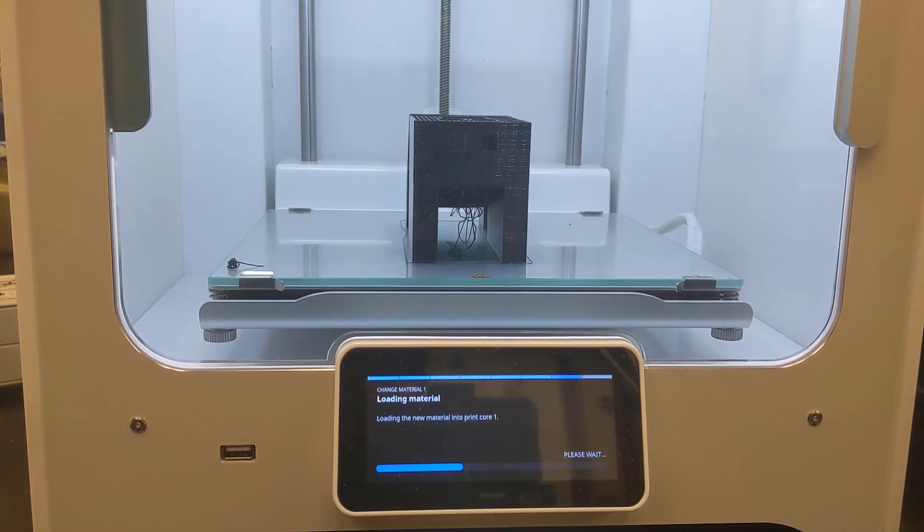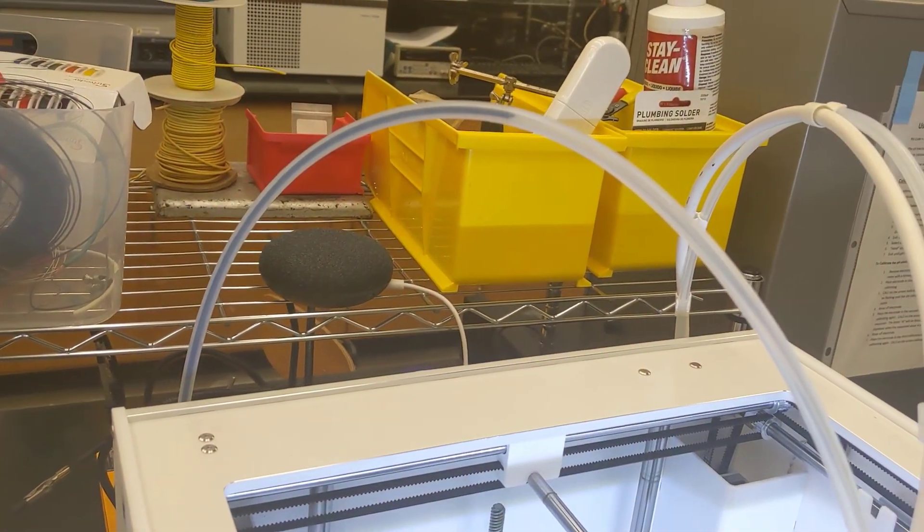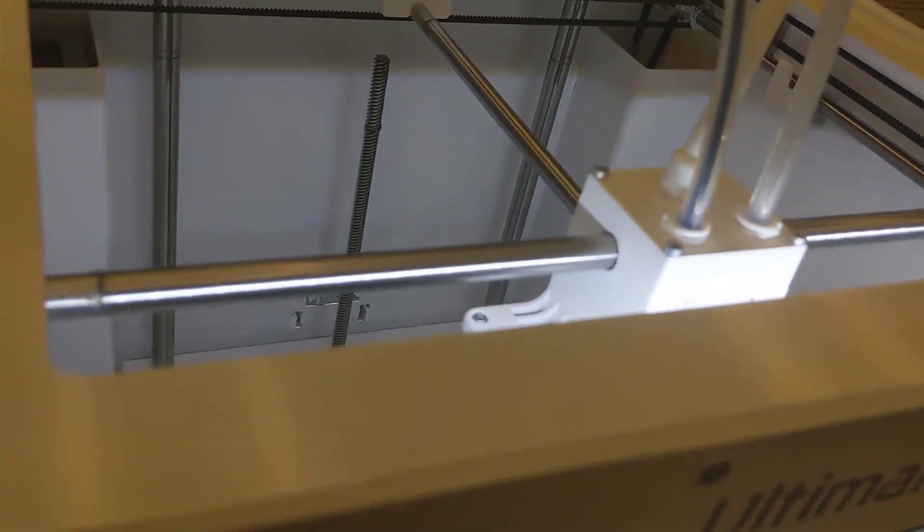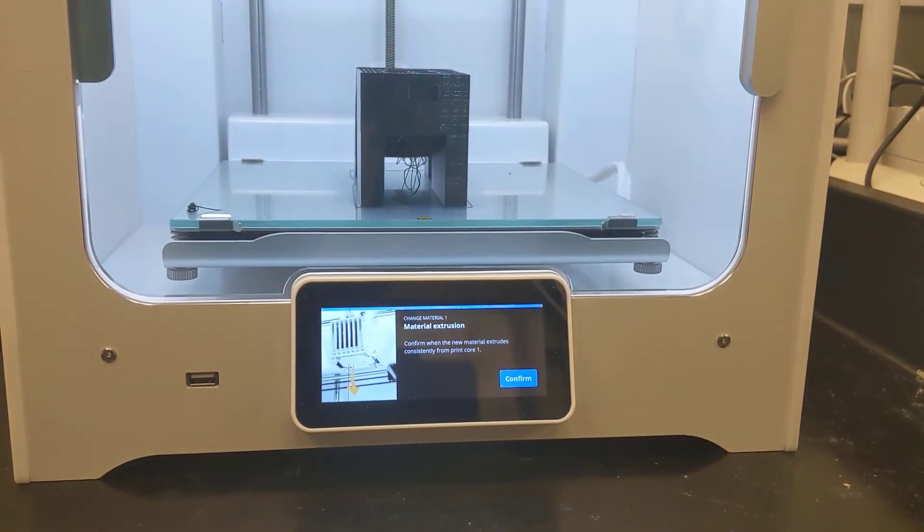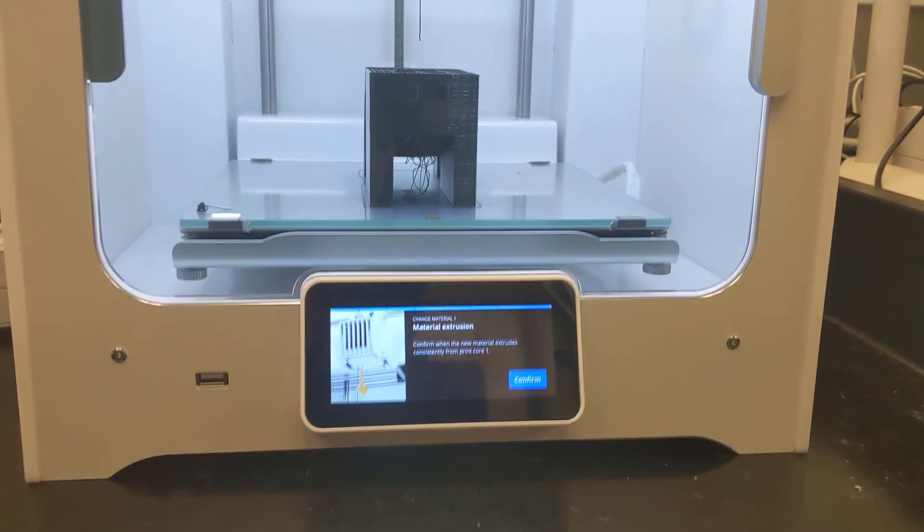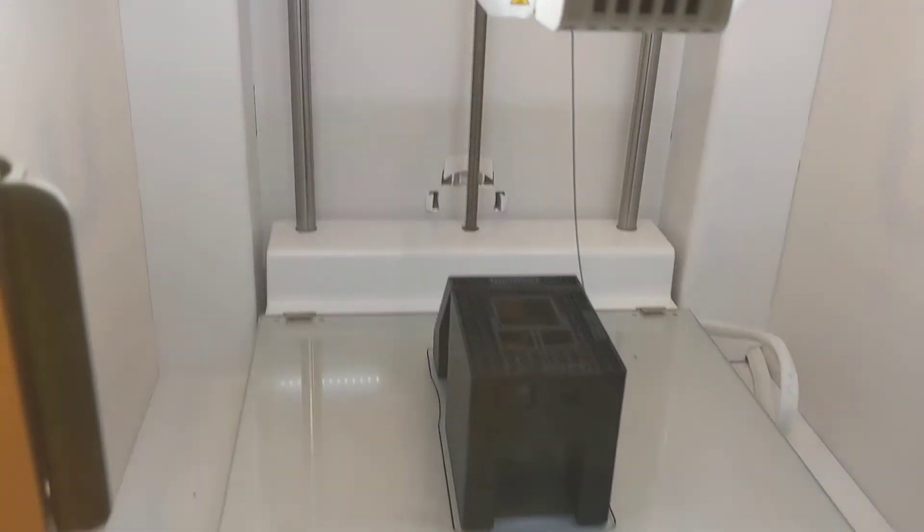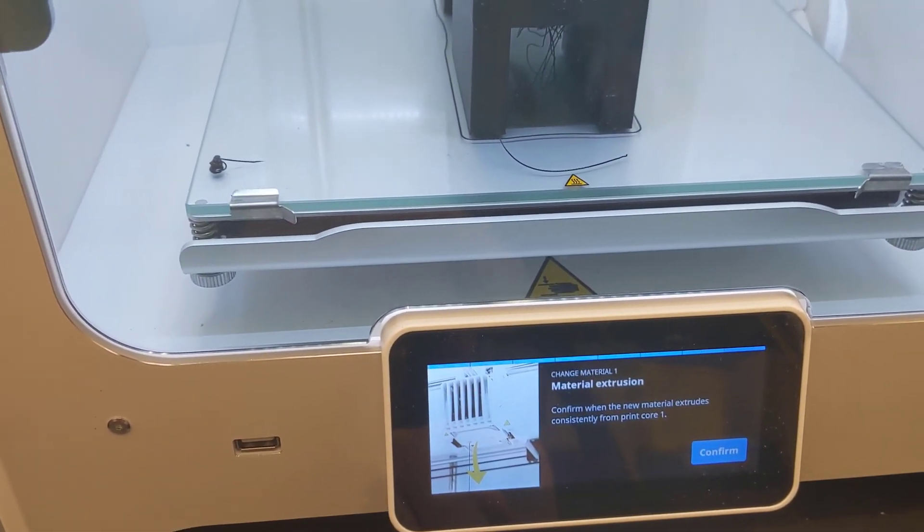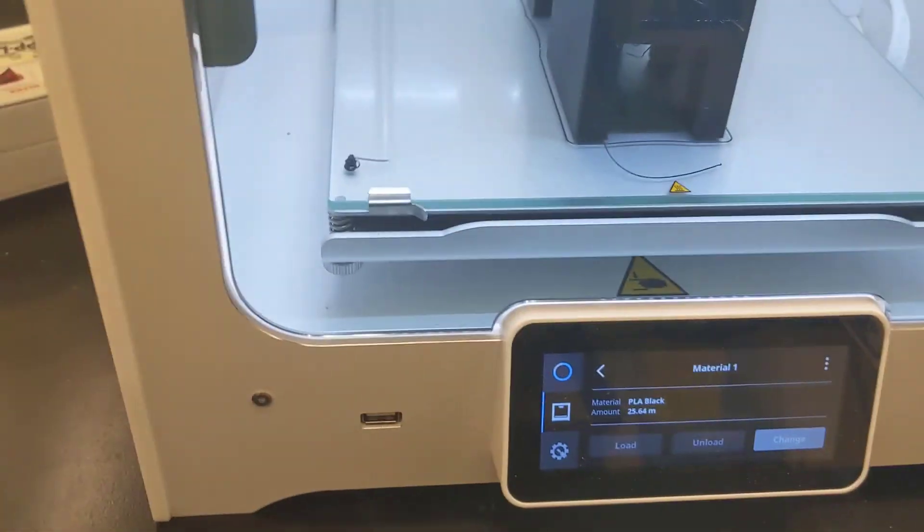And what we should hear is the Bowden tube, which you can now see as it re-engages back into the printhead. Okay, and so now you can see it's actually extruding material in real time, and it tells us confirm when the new material extrudes material. We can say confirm, and we're good to go.